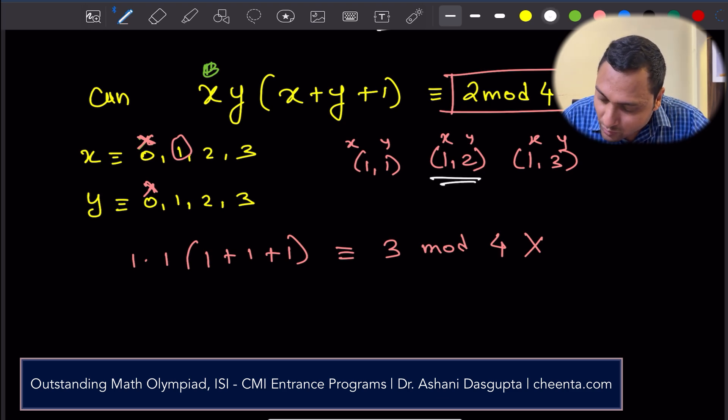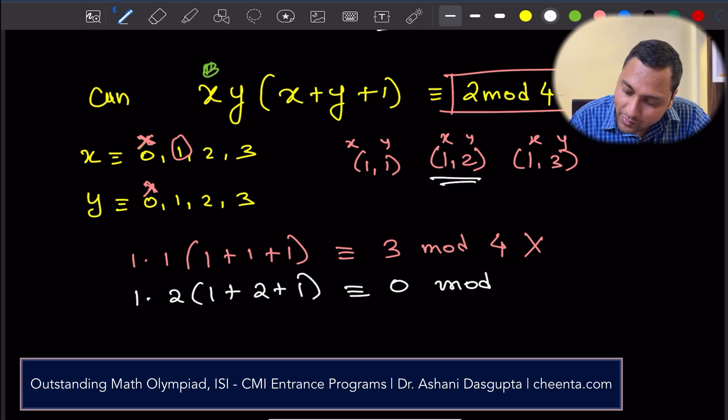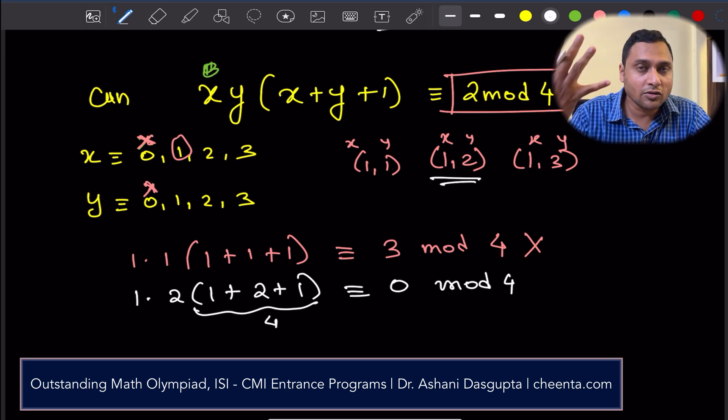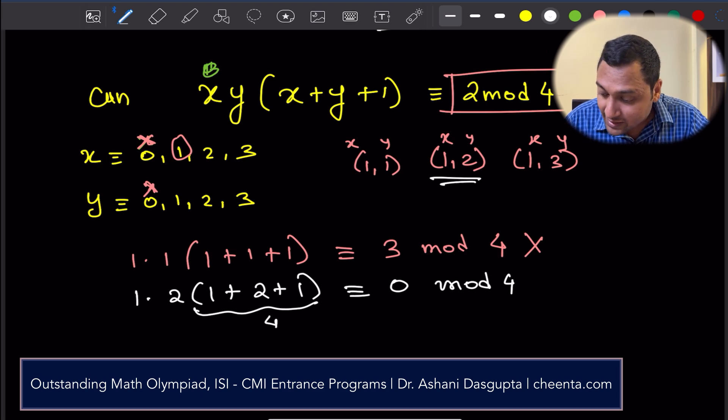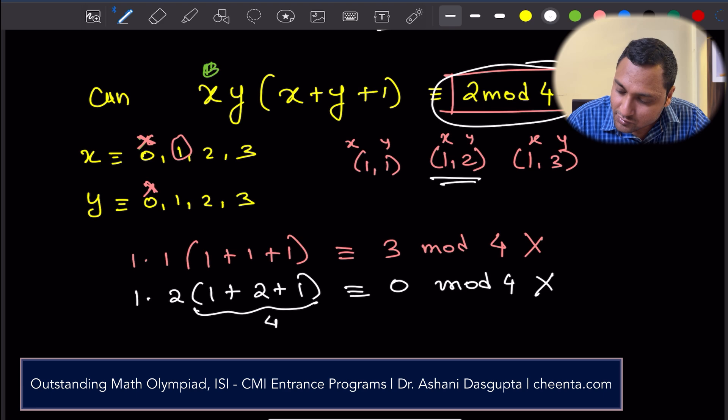Then let's try (1,2). 1 times 2, 1 plus 2 plus 1. This is congruent to 0 mod 4. Why? Because this is 4, right? 4 is 0 mod 4. So, the left-hand side is 0 mod 4. Again, doesn't work because we need it to be 2 mod 4. So, this one doesn't work.